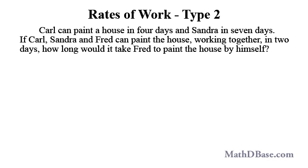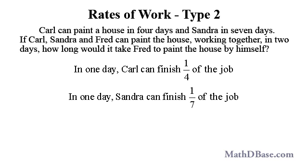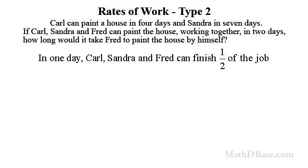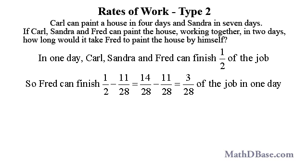Carl can paint a house in four days, and Sandra in seven days. If Carl, Sandra, and Fred can paint the house working together in two days, how long would it take Fred to paint the house by himself? In one day, Carl can finish one-quarter of the job and Sandra can finish one-seventh of the job. So working together, Carl and Sandra can finish one-fourth plus one-seventh, or 11/28 of the job, in one day. Since all three together complete half the job in one day, Fred can complete one-half minus 11/28, or 3/28 of the job, in one day working alone.